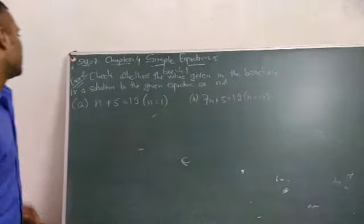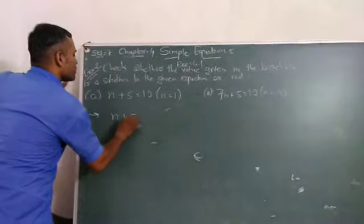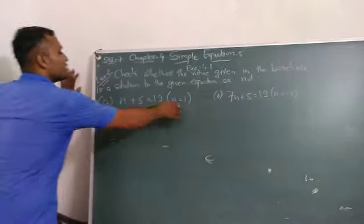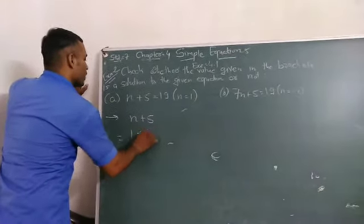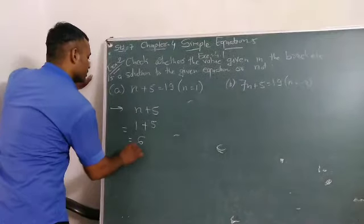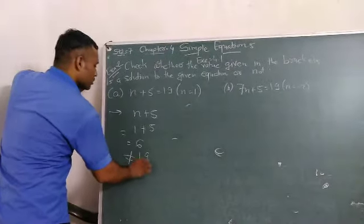Next. First thing, n plus 5. We put n equals 1. 1 plus 5 equals 6. But this is not equal to 19.